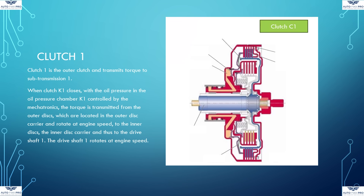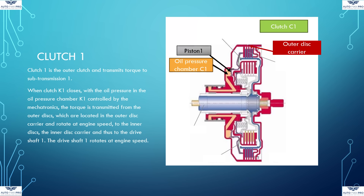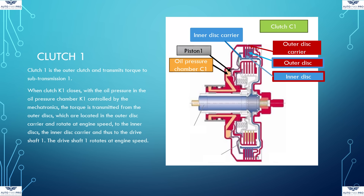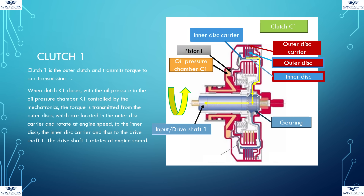Clutch 1 is for the odd gears — first, third, and fifth gear — as well as reverse gear. It is the outer and therefore larger clutch, as the highest torque is transmitted in first gear. The torque is transmitted to the outer disc carrier. When clutch C1 closes, with oil pressure being controlled by the mechatronics in the oil pressure chamber C1, the torque is transferred from the outer disc carrier to the inner disc carrier via the outer and inner discs. This is connected to driveshaft 1 via a gearing, which therefore also rotates at engine speed. Clutch 1 has a disc spring that opens the clutch as soon as there is no longer any oil pressure in oil pressure chamber 1.